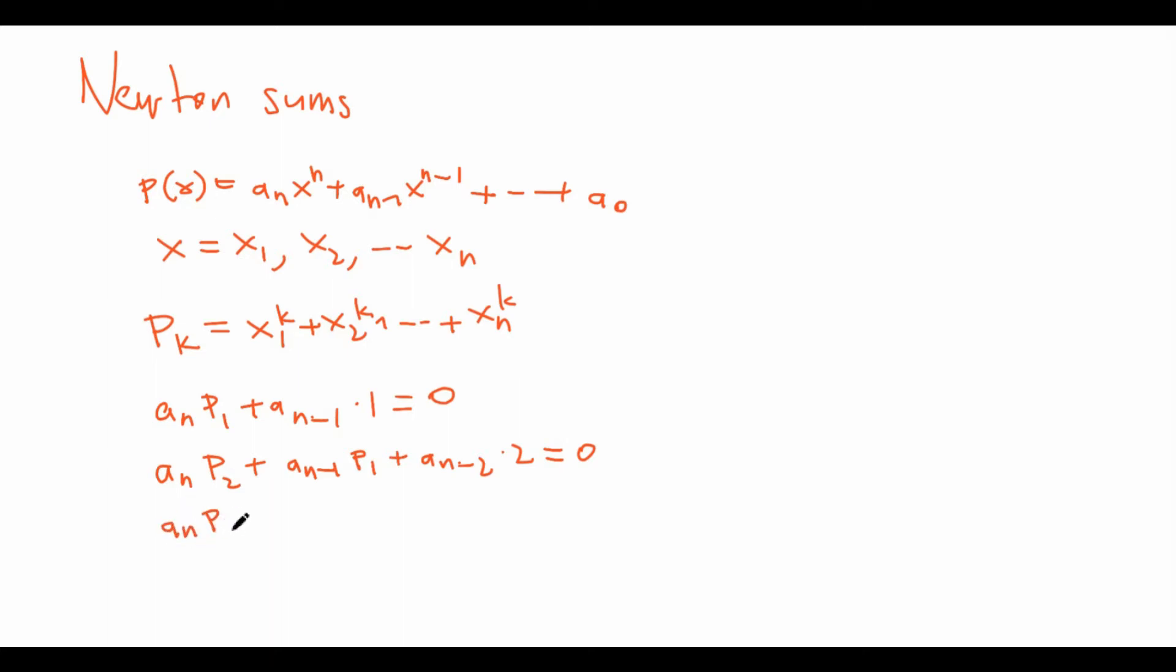And once we write the third equation down: a_n*P_3 plus a_{n-1}*P_2 plus a_{n-2}*P_1 plus a_{n-3}. Well what do you think is multiplied to a_{n-3}? Well you guessed it, it's 3, and this equals 0.